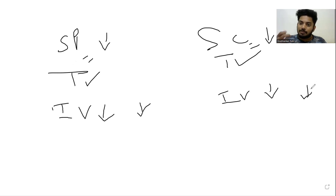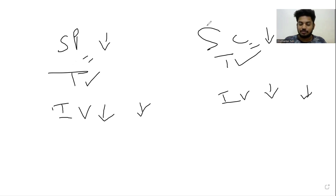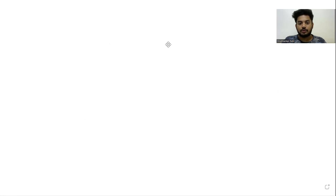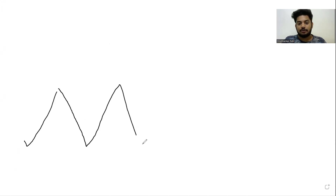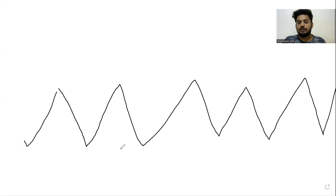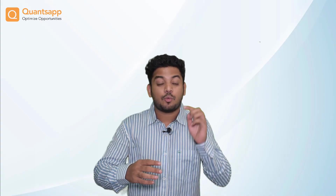When implied volatility goes down, my premiums will melt. I can achieve this by identifying the sweet spot to write options using volatility. To do that, let's first understand how implied volatility behaves. Implied volatility has mean-reverting characteristics — you will never see an implied volatility chart that is consistently trending up or consistently trending down.